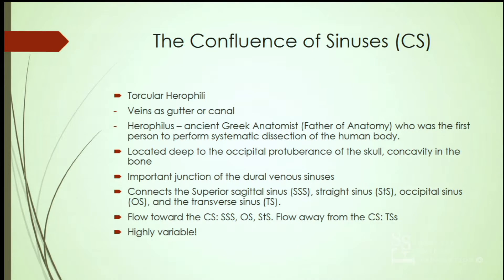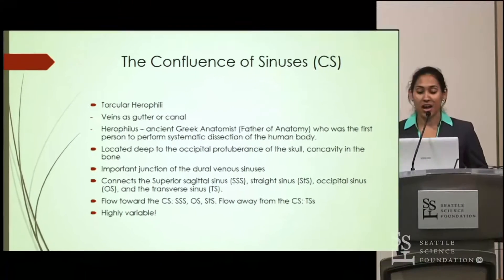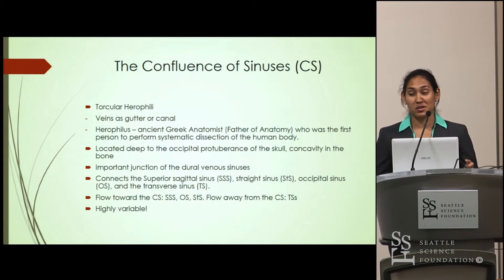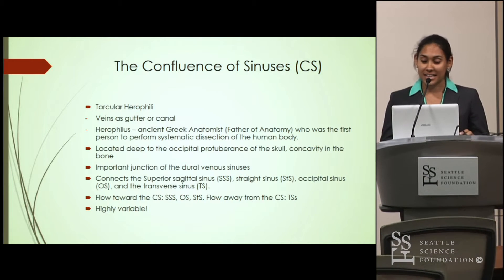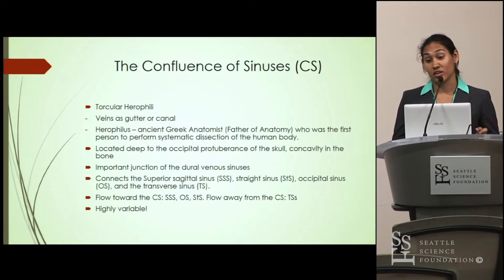Another older term used for the confluence of sinuses is the torcular herophili. It describes veins as a gutter or canal, and the term torcular herophili also honors Herophilus, who was an ancient Greek anatomist claimed as the father of anatomy because he was the first to perform systematic dissections on the human body.